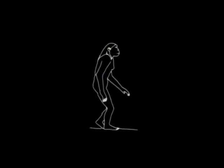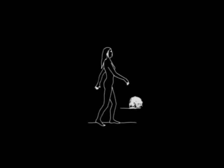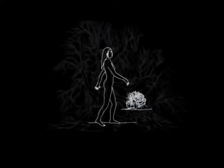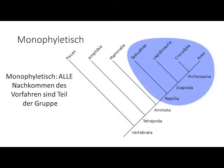Sogar der Übergang von Fischen zu Landwirbeltieren, Dinosauriern zu Vögeln oder Affen zu Menschen ist nur eine Frage zunehmender oberflächlicher Veränderungen, die langsam auf aufeinanderfolgenden Ebenen grundlegender Ähnlichkeiten zusammengestellt werden. Diese stellen monophyletische Gruppen dar, die für immer alle Nachkommen dieser Gruppe umfassen werden.